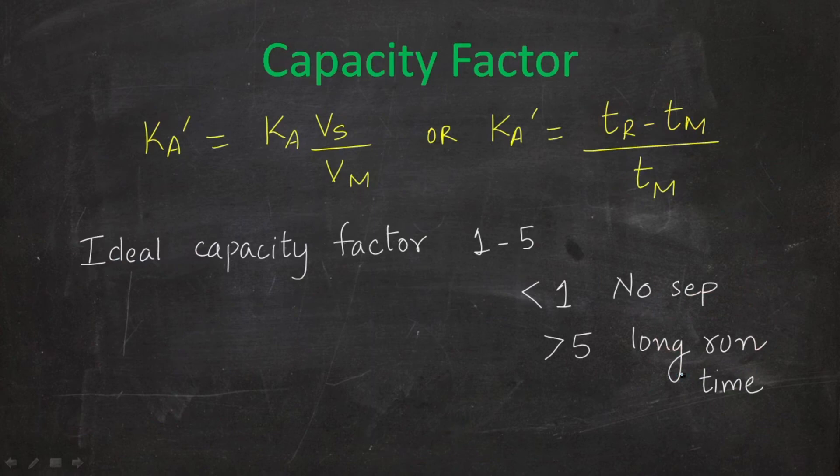The next term is capacity factor — how good the separation is. Capacity factor k equals the partition ratio multiplied by the volume of stationary phase divided by the volume of mobile phase. Another equation defines it as the ratio of adjusted retention time to dead time.